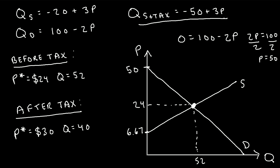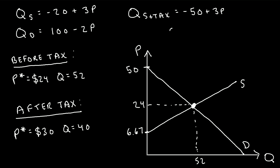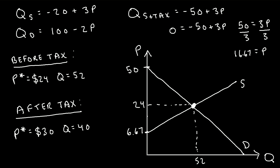After the $10 tax was imposed, we have our new quantity supplied equation. Let's graph it. Plugging in zero for q gives zero equals negative 50 plus 3p. Adding 50 gives 3p equals 50, so p equals 50 over 3, which is about 16.67. This new supply curve crosses the p-axis at 16.67 and has a slope that perfectly matches the original supply curve. This is S plus tax. Notice this new supply curve is shifted upward by exactly the amount of the tax — $10 per unit.